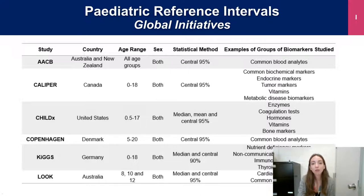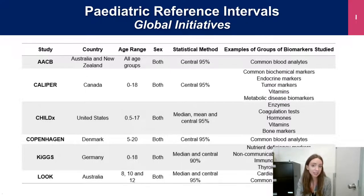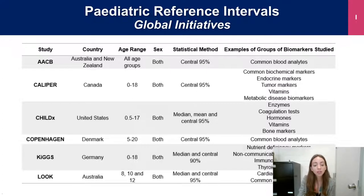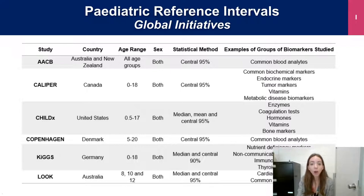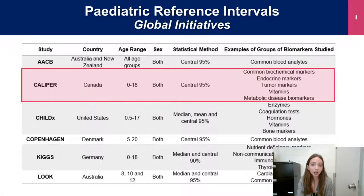I've included a list of some of the most prominent pediatric reference interval initiatives around the world, including Australia and New Zealand, the CALIPR initiative here in Canada, CALIPER from the United States, the Copenhagen Initiative from Denmark, the KIGS Initiative from Germany, and the LOOK Initiative from Australia. These initiatives focus on different age groups—some from birth to 18, some from five years and older, and others doing point estimates at 8, 10, and 12 years of age. They also differ in statistical methodology and the biomarkers studied. For my presentation, I'll be focusing on the CALIPR Initiative.